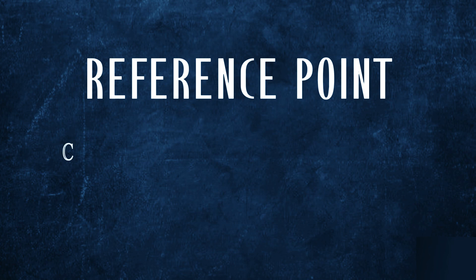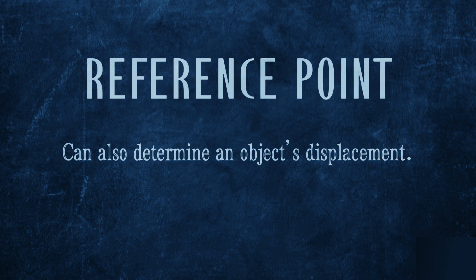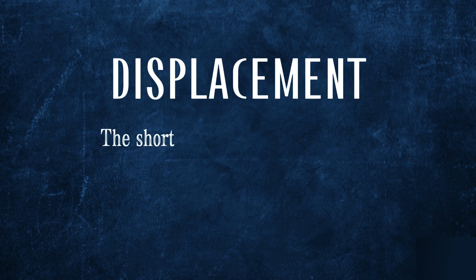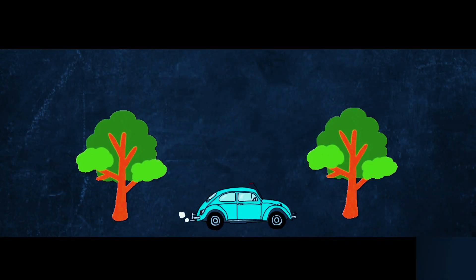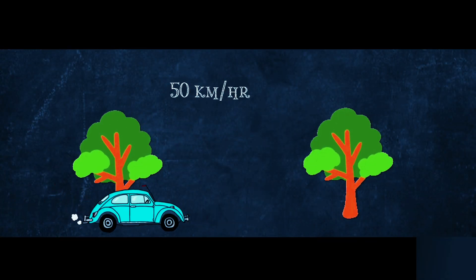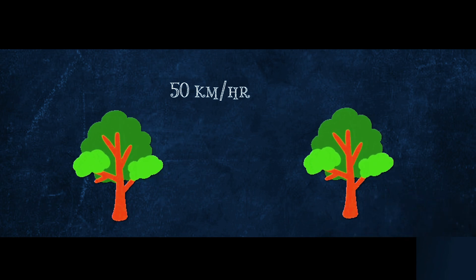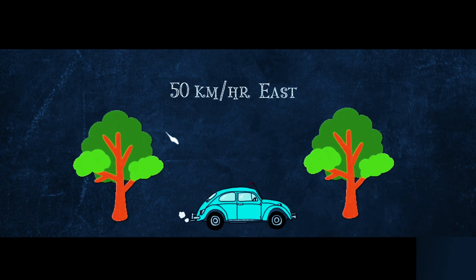With reference points, we can also determine an object's displacement. Displacement is the shortest path or the difference between the initial and final positions of objects in motion. This vehicle is moving at a speed of 50 km per hour and is moving in a straight line towards the east.